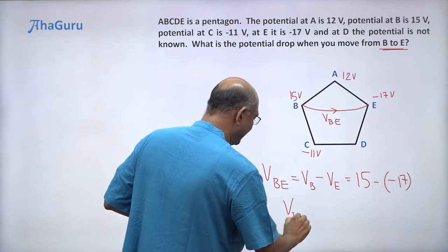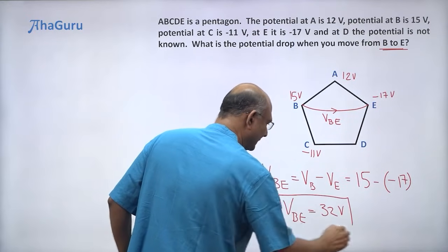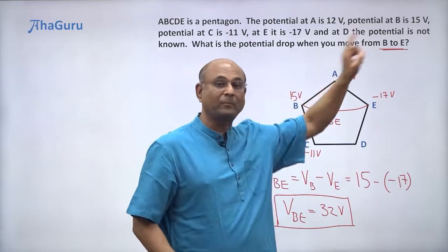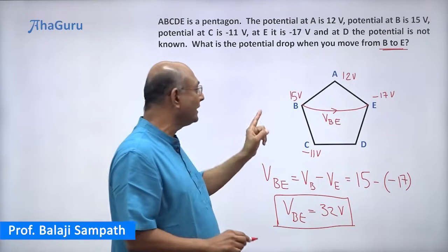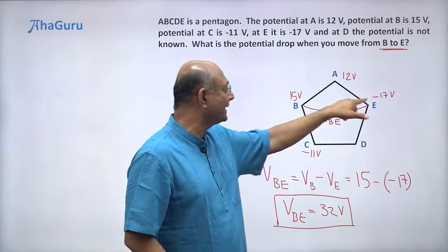So VBE is 32 volts. So that is the answer to this question. Remember, when you want to talk about the potential drop from B to E, you only need B and E. You don't need the other points. So just 15 minus of minus 17, 32 volts.